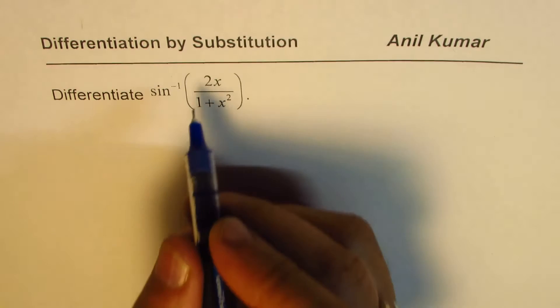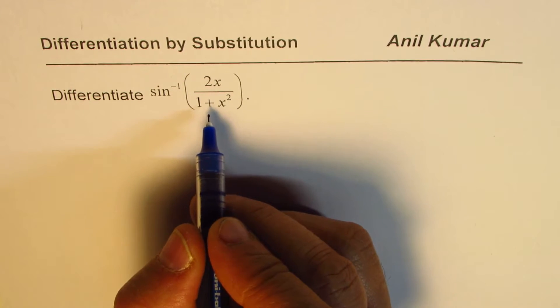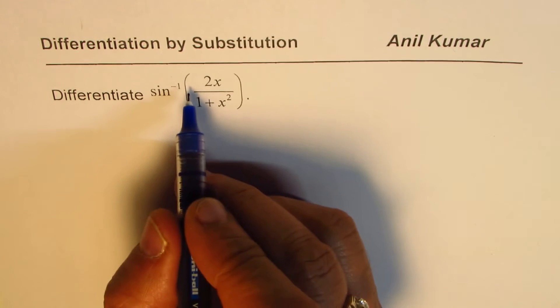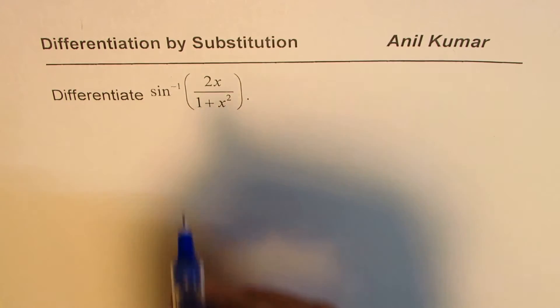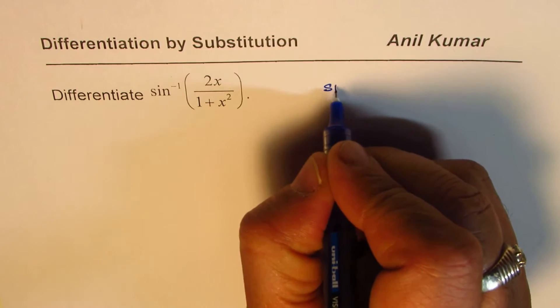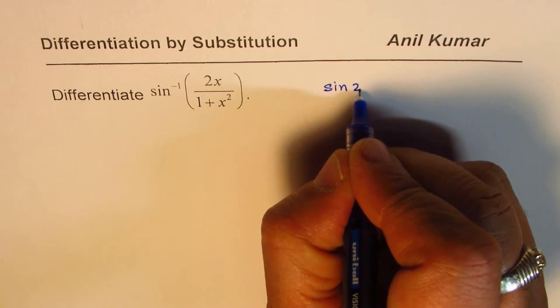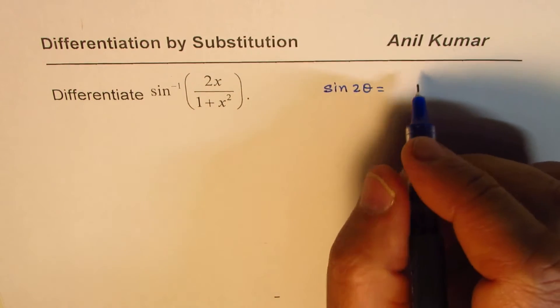We'd like to change this form so that we could get sine inverse of sine something. There is a trigonometric formula which can help us do this. Let me write down the formula, then I can explain how we derive this identity.